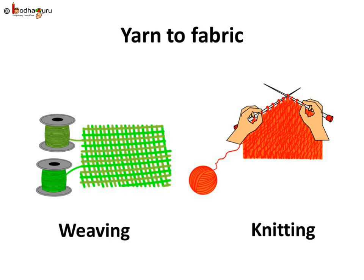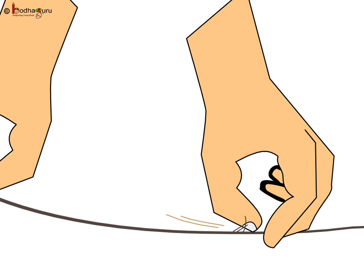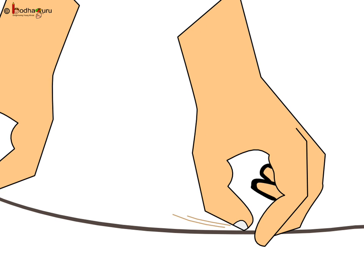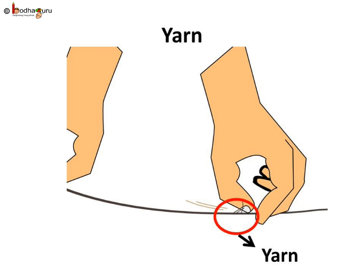So we saw that either by weaving or knitting yarn, a fabric is formed. There can be other methods too. But how do we get yarn for the fabric? If we take a piece of yarn, hold one end of it, and scratch the other end along its length, we find that the yarn splits into thin strands. These are fibers.